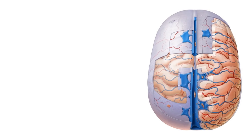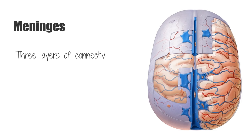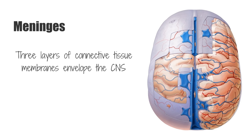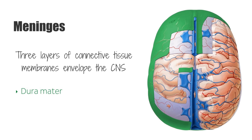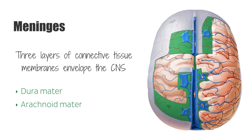To begin, let's first look at the meninges. The meninges is the collective term for the connective tissues that cover the brain and spinal cord. Together, they line the cranium and vertebral canal, providing protection to the central nervous system. The three layers of tissues that form this protective covering, from outermost to innermost layer, are: the dura mater, the arachnoid mater, and the pia mater.